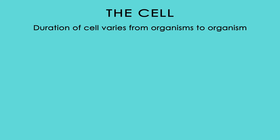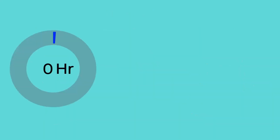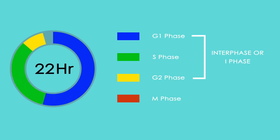The duration of the cell cycle varies from organism to organism and from cell type to cell type. A typical eukaryotic cell cycle, such as a human cell, is about 24 hours; in yeasts, it is only about 90 minutes. The cell cycle includes two basic phases: Interphase and M phase, also called the mitotic or mitosis phase.